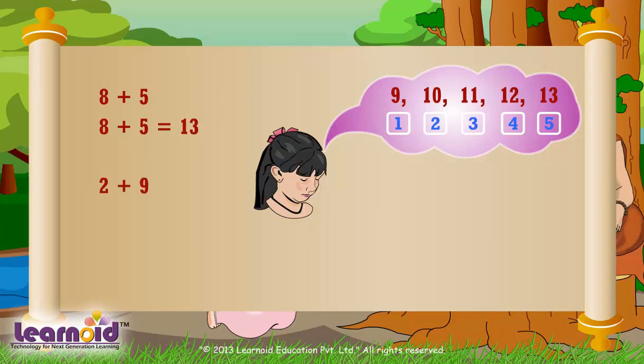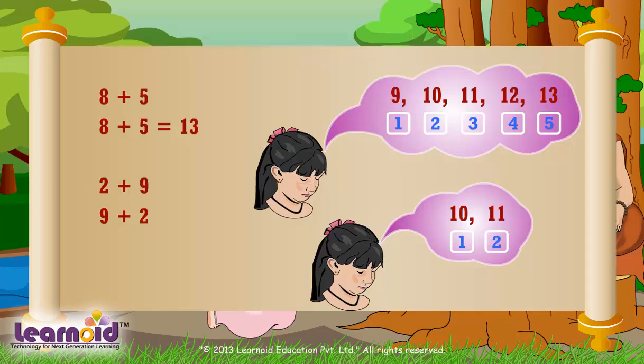Let's do 2 plus 9. Always start from the bigger number and count the second number of times. Here we will start from 9 and count 2 times. 10, 11. So 9 plus 2 equals 11, or 2 plus 9 equals 11.